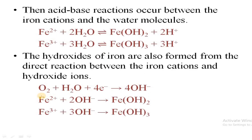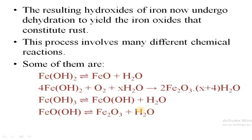After iron gets a +2 charge, it reacts with water to give ferrous hydroxide, and in the +3 case, ferric hydroxide. These compounds can also be formed another way: oxygen can react directly with water in the presence of four electrons to give OH⁻, and this OH⁻ can react directly with iron ions (Fe²⁺ or Fe³⁺) to give ferric and ferrous hydroxide. This ferric and ferrous hydroxide further undergoes dehydration to give ferric and ferrous oxide — the oxides of iron.